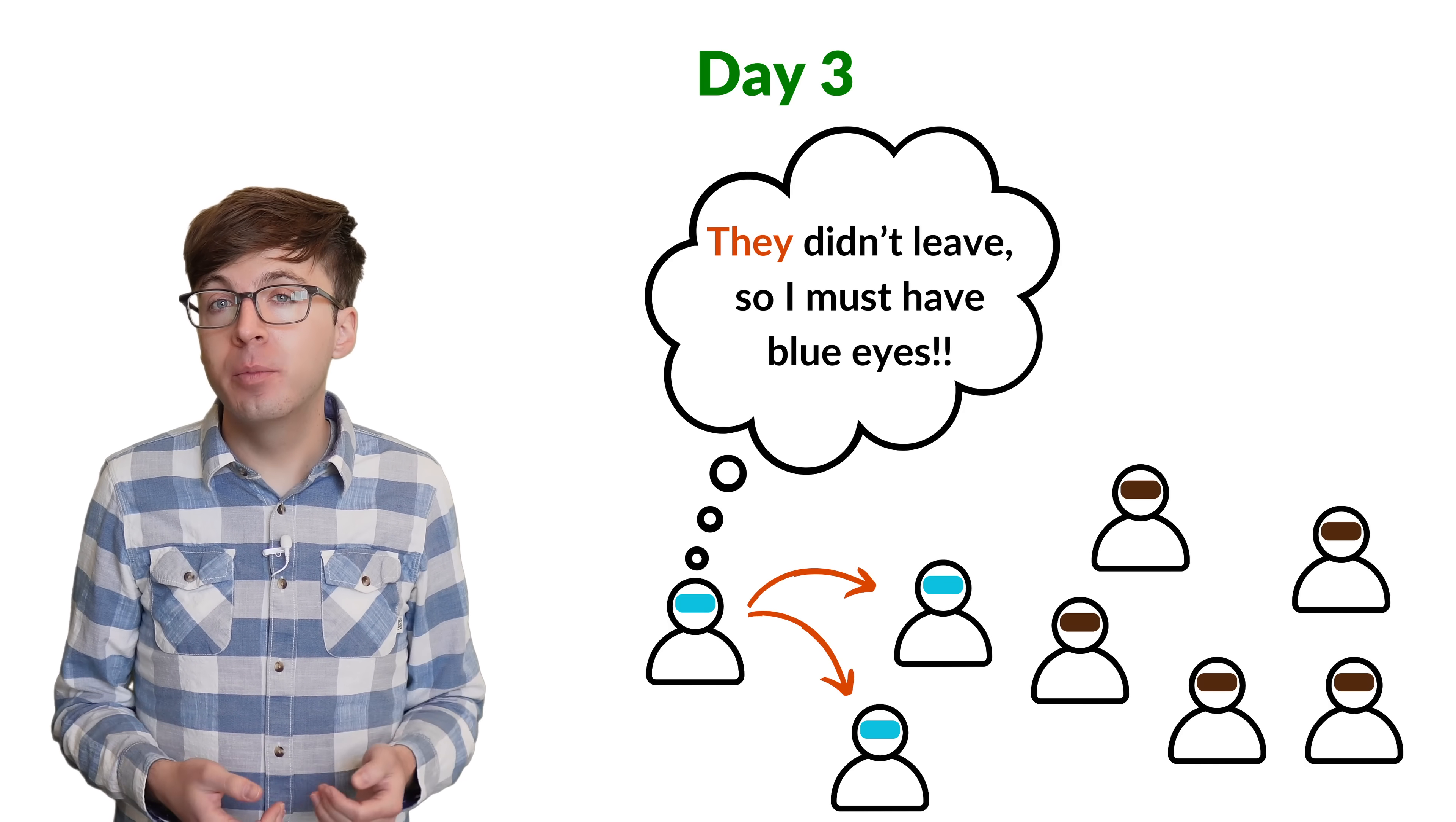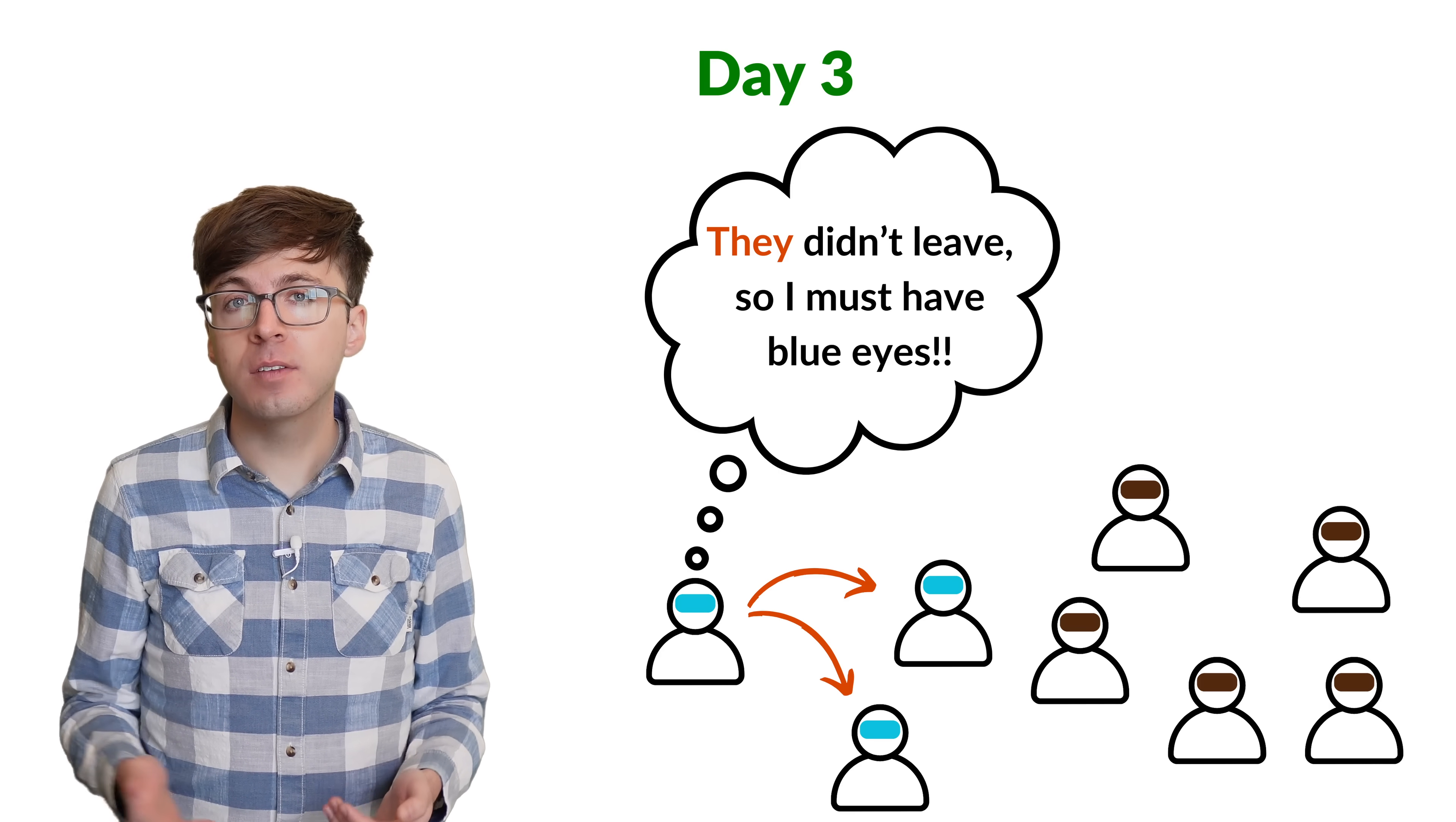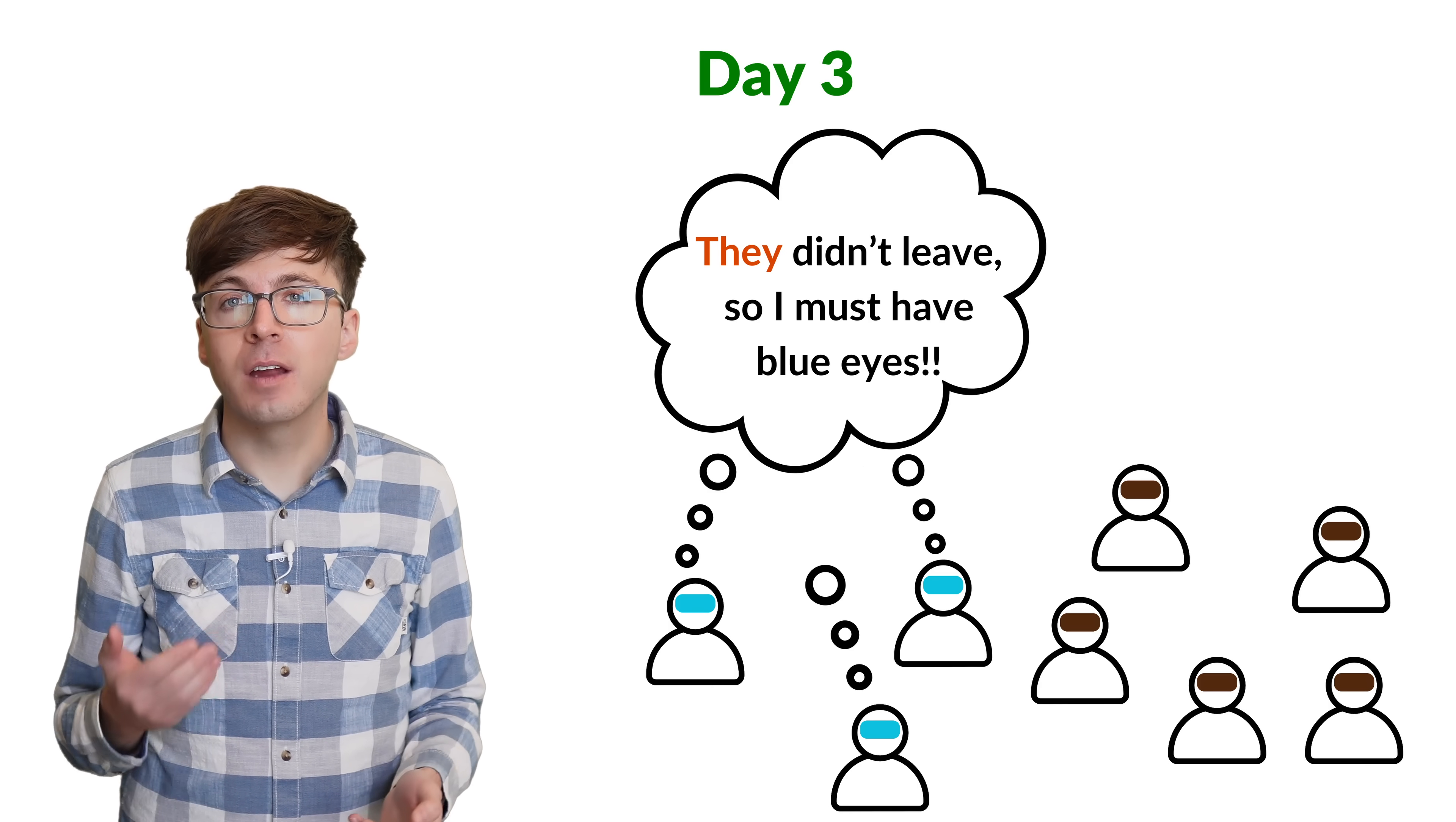On day three, you see the blue eyed people are still there. So there must be a third person with blue eyes on the island. It must be you. On the third day, you realize you must have blue eyes. The other blue eyed people will make the same discovery at the same time. So the three blue eyed people leave at midnight on night three.